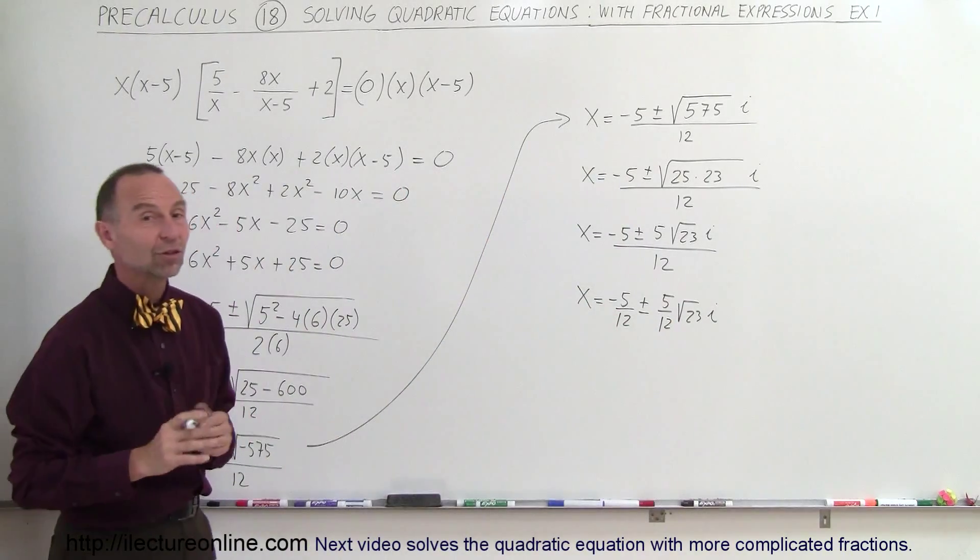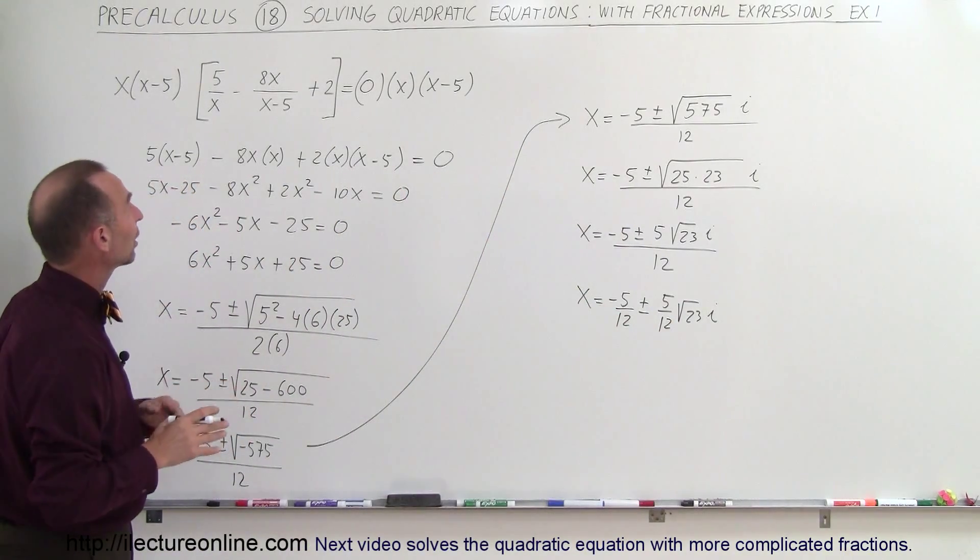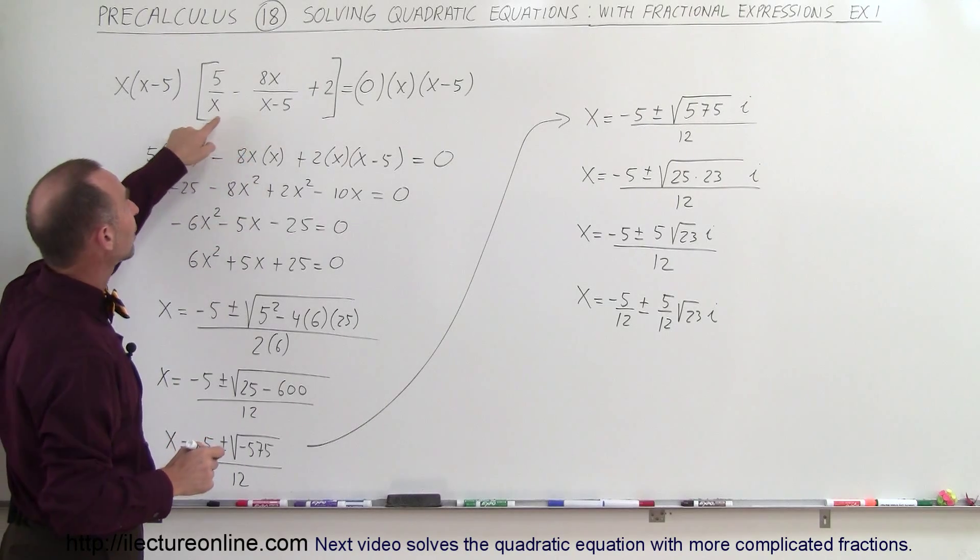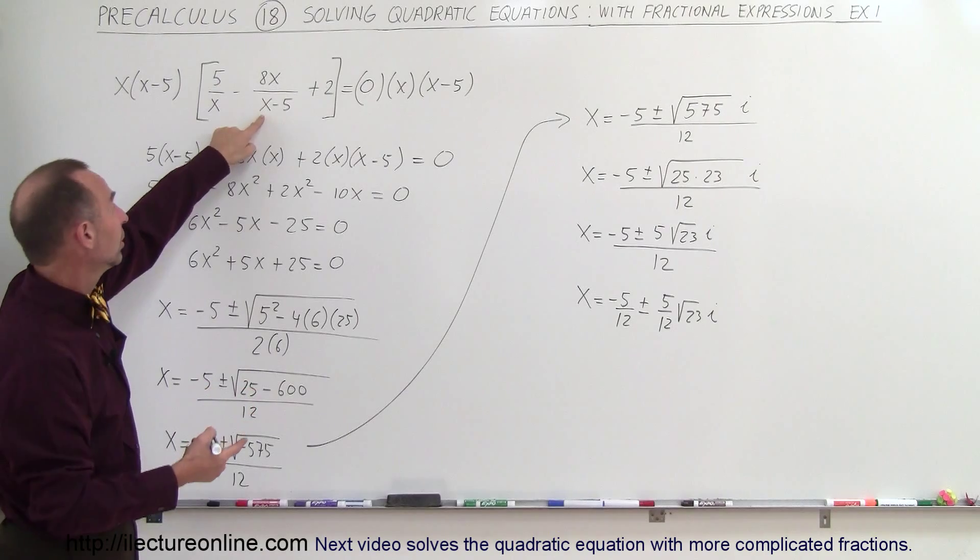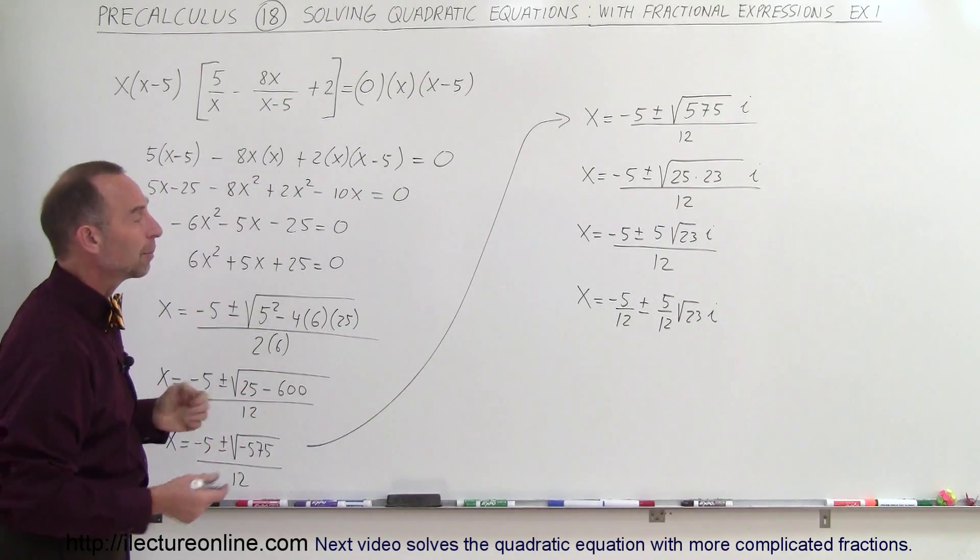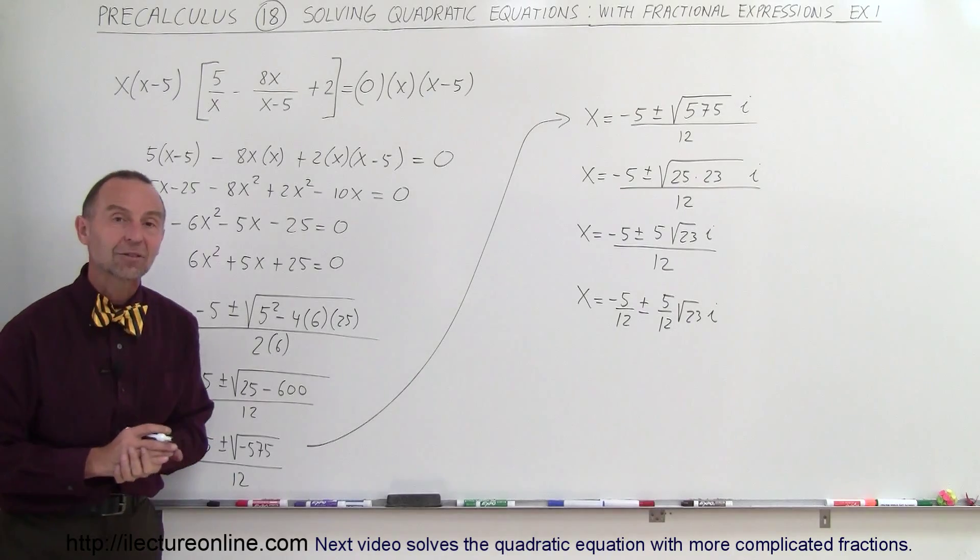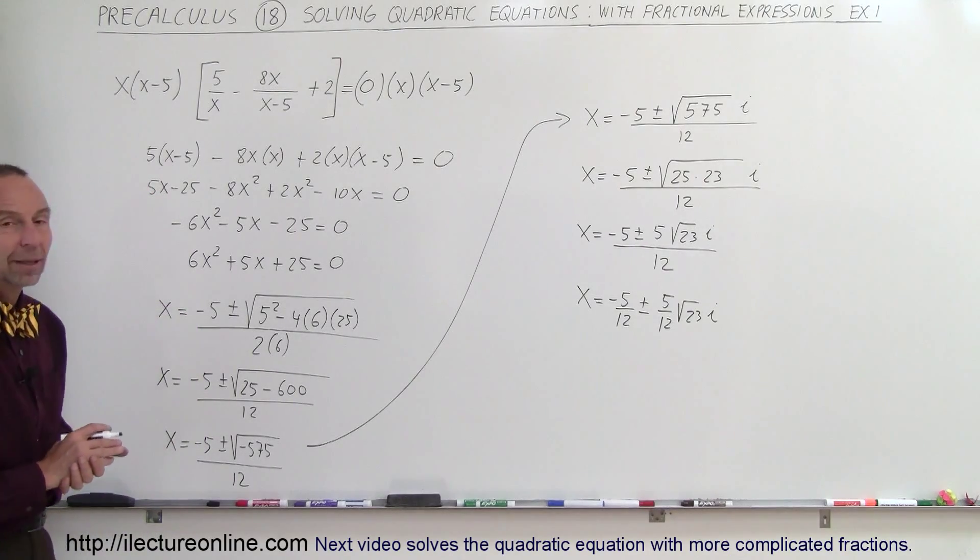And that's the final answer for this equation. Now, we want to make sure that we don't have any violations. We didn't come up with x equals 5 as an answer because that would not be permissible, and x equals 0, that would also not be permissible. So it looks like we have the correct answers, and that's how we solve a problem like that.